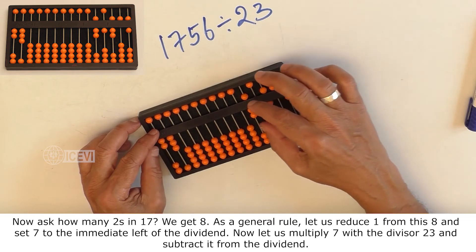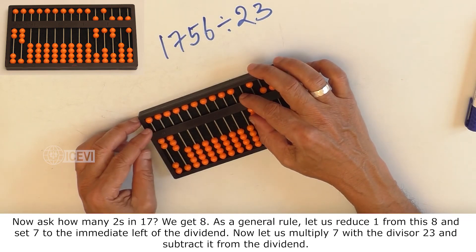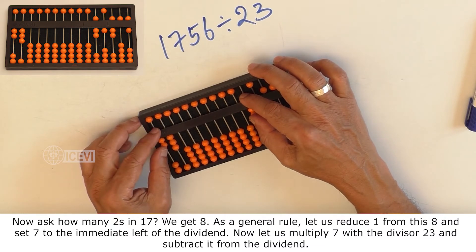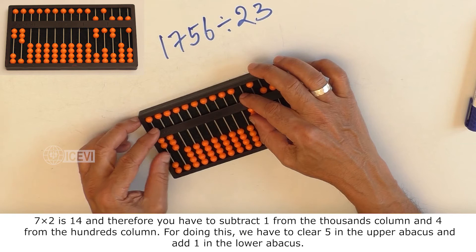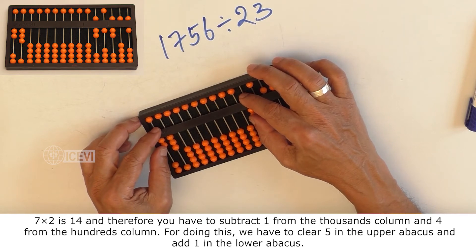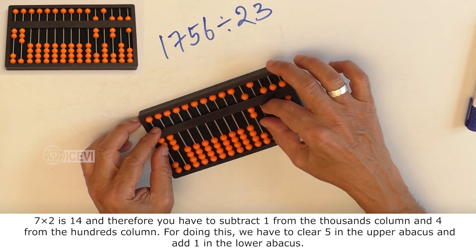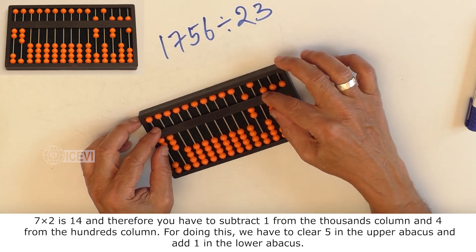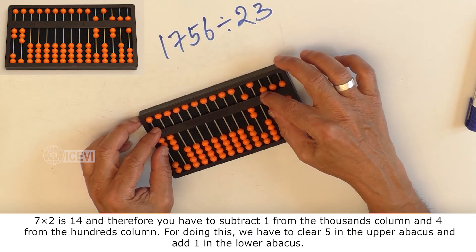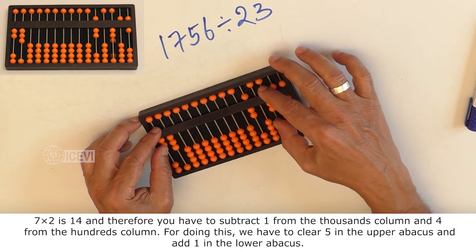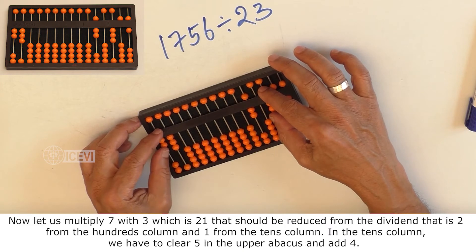Now let us multiply 7 with the divisor 23 and subtract it from the dividend. 7 multiplied by 2 is 14 and therefore we have to subtract 1 from the thousands column and 4 from the hundreds column. For doing this, we have to clear 5 in the upper Abacus and add 1 in the lower Abacus.